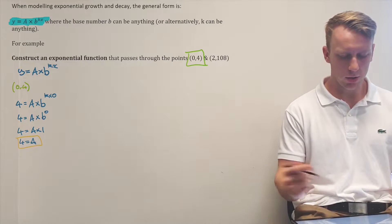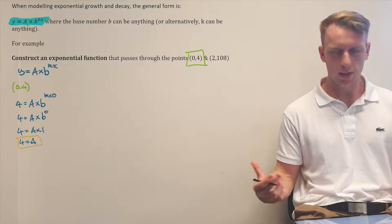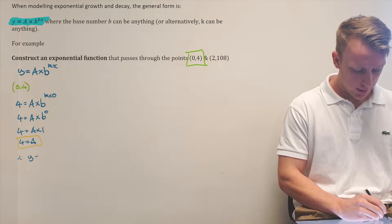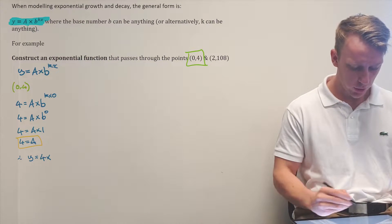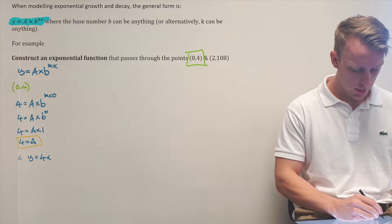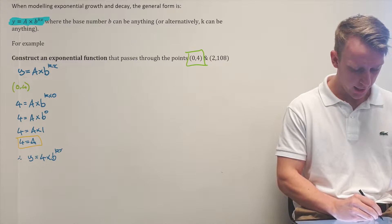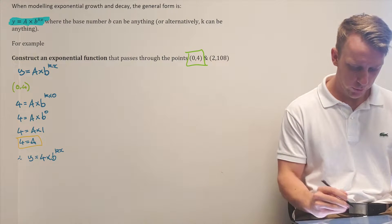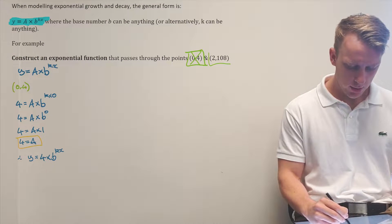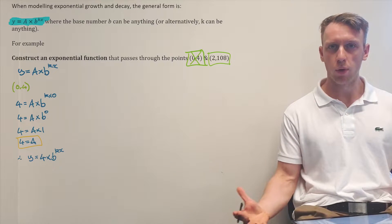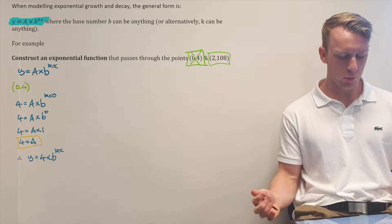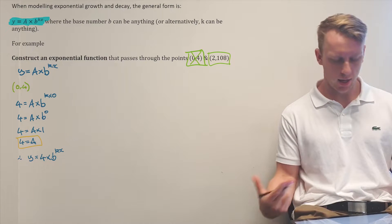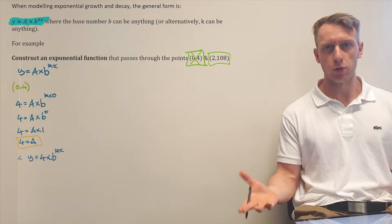That first point gives us that a is equal to 4. So our current situation is we've got 4 times b to the power of kx. The problem is that now we've used this first point, we're only left with one point but two unknown variables to solve for — b and k.